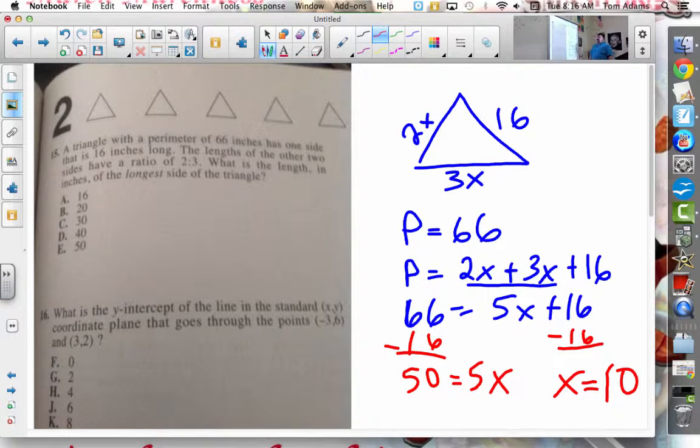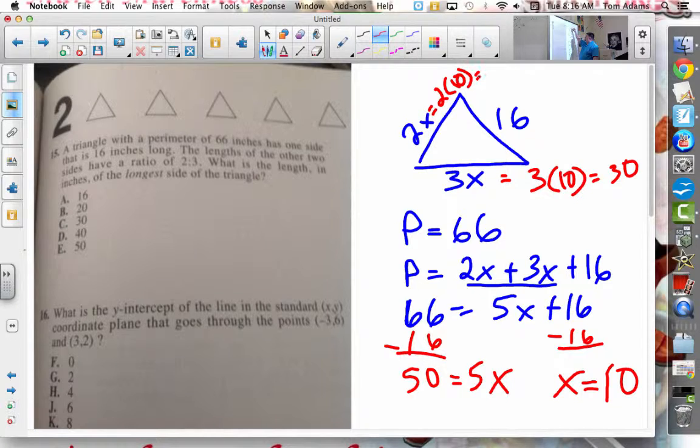What's x equal? Yeah, x equals 10, but that's not really the answer. This is going to be 3 times 10, so this side length of the triangle is going to be 30, and then this side length will be 2 times x, which is 10, which will be 20.